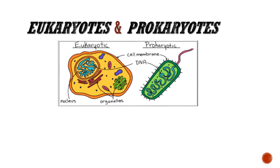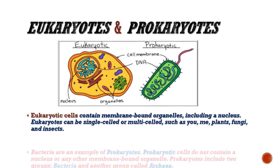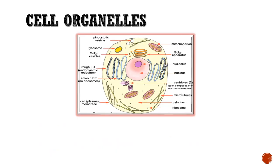Eukaryotic cells contain membrane-bound organelles including a well-defined nucleus. Eukaryotes can be single-celled or multi-celled, such as you, me, plants, fungi, and insects. Prokaryotic cells do not contain a well-defined nucleus or any other membrane-bound organelle. Examples are bacteria and archaebacteria.